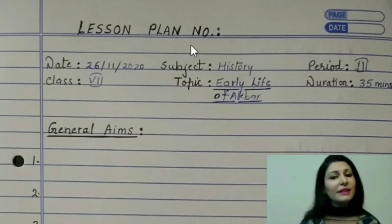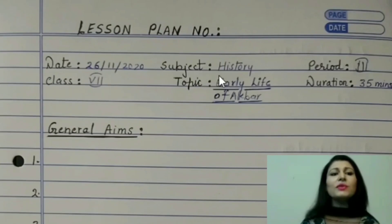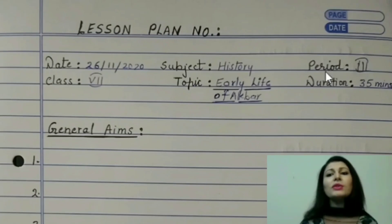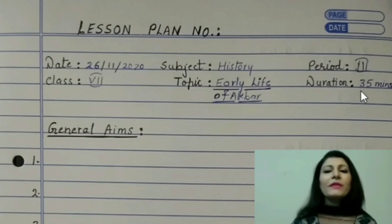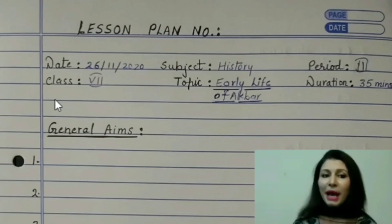First of all you will write the lesson plan number on top. Then you will write date at the top left-most corner. Then below it you will write class. In the center you will write subject. Below the subject you will write topic, and don't forget to underline the topic. Then at the right-most corner you will write period and below the period you will write duration, which can be 35 or 40 minutes. While teaching, you also have to write these things in the same manner on the blackboard or whiteboard whatever is there in your classroom.